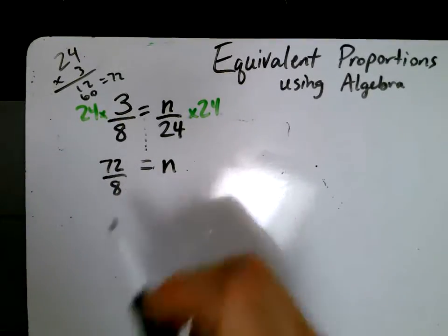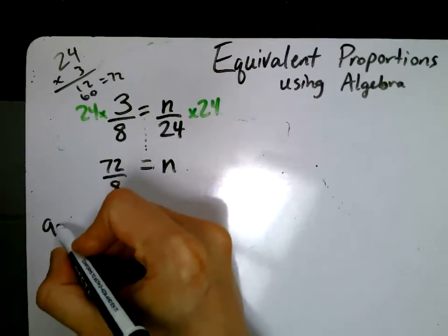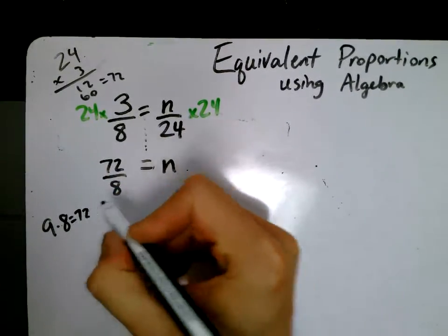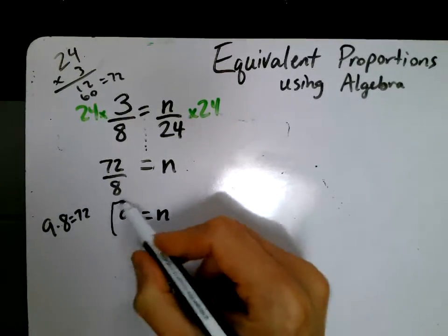So 72 divided by 8, and if you know your times tables, you know that 9 times 8 is 72. So therefore this is going to be 9 equals n, or n equals 9.